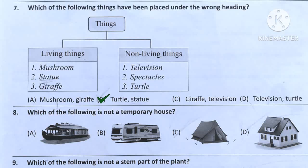Question number 8. Which of the following is not a temporary house? Option A: Houseboat. Option B: Caravan. Option C: Tent. Option D: Pakka house. Options A, B, and C are temporary houses, but Option D is not a temporary house. So the answer will be Option D.